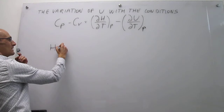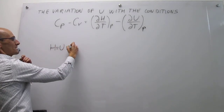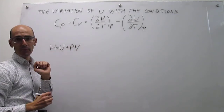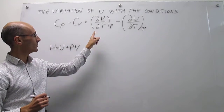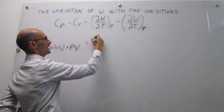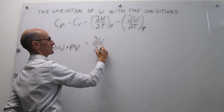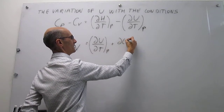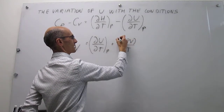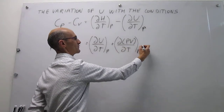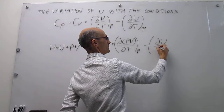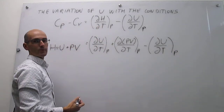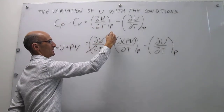We use the fact that enthalpy is the sum of internal energy plus the pressure-volume term. So that term now has two parts: the differential of U over dT at constant pressure, plus the differential of PV over dT at constant pressure. Then we subtract the variation of internal energy with respect to temperature at constant pressure — and very obviously, those two terms cancel.